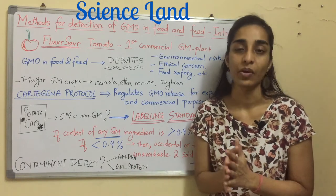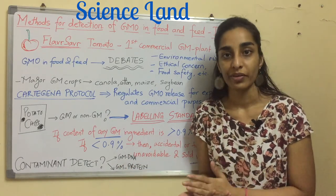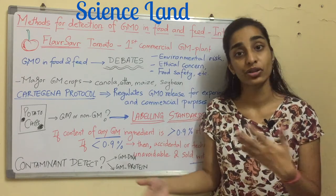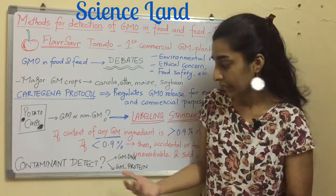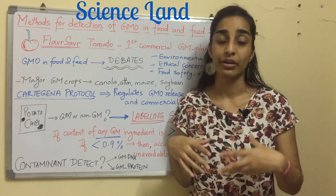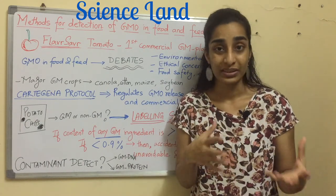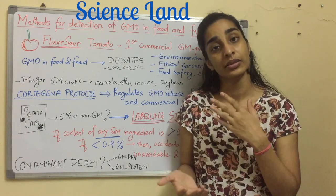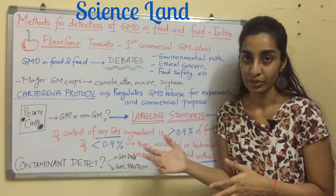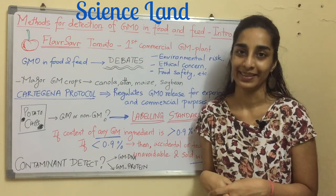So how are we going to detect whether our food has a genetically modified ingredient or not? Basically there are two methods: you identify the genetically modified DNA, or you identify the genetically modified protein. Either of the two can be used to conclude whether a particular food product is GMO or not. That's the introduction — thank you so much for watching, bye bye.